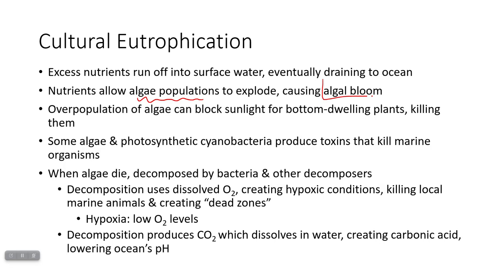You might think tons of algae provides food for consumers, but there are other consequences. A large amount of algae can cover the surface of the water and block sunlight for plants lower in the water column, killing them and reducing food for primary consumers. Some algae and photosynthetic bacteria called cyanobacteria can also produce toxins that build up in high enough concentrations to start killing organisms.